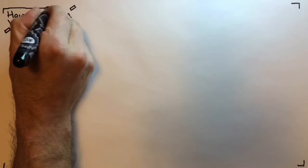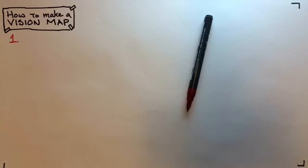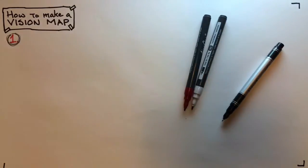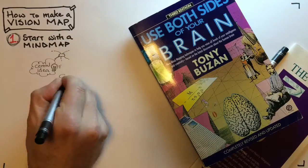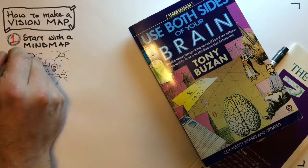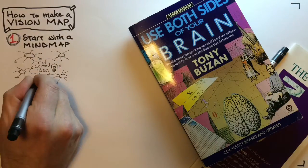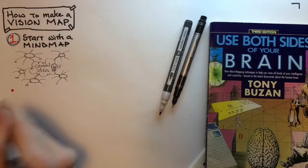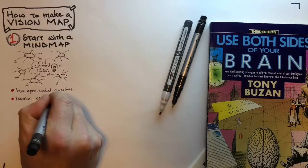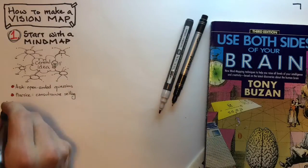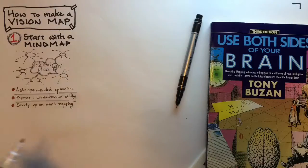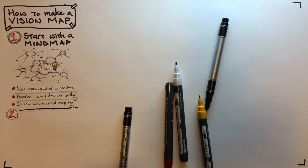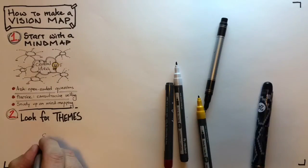This is the technical approach behind creating a vision map. It all begins with a mind map with the client. Practice asking open-ended questions and consultative selling, and be sure to study up on the techniques of mind mapping from Use Both Sides of the Brain by Tony Buzan.